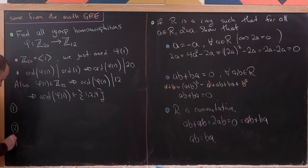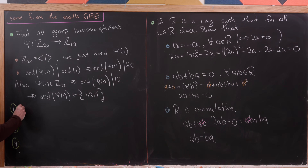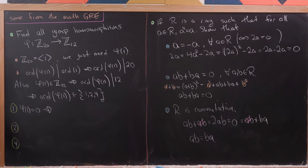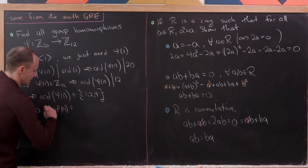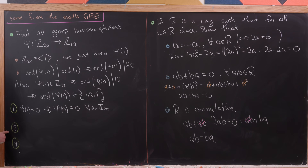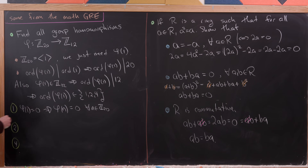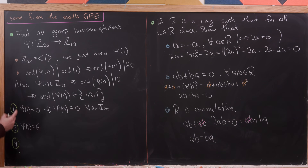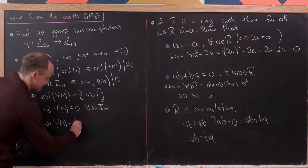We examine each case. If the order of φ(1) is 1, then φ(1) = 0 (the only element of order 1 in Z₁₂), so φ(n) = 0 for all n in Z₂₀. If the order of φ(1) is 2, the unique element of order 2 in Z₁₂ is 6 (since 6 + 6 = 12 ≡ 0), so φ(1) = 6 and φ(n) = 6n.